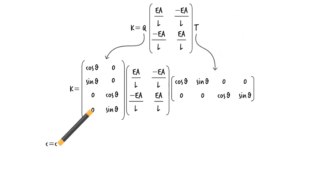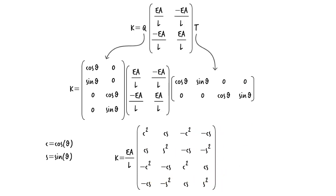If we let C represent cosine theta and S be sine theta, the matrix product can be written as. This is the member stiffness matrix in the global coordinate system.